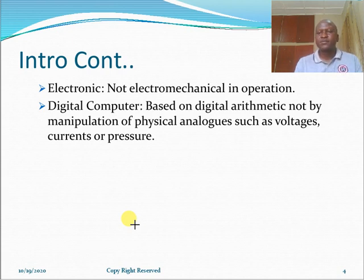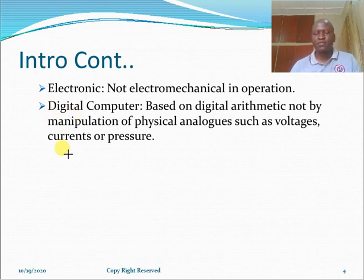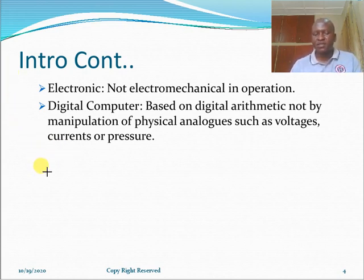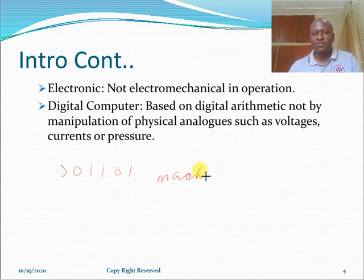The next feature required of the Von Neumann computer is that the computer system also needs to be a digital computer — in other words, based on digital arithmetic. The computer should be a system capable of manipulating strings of zeros and ones, because that is the native language of the computer system, referred to as machine language or machine code.